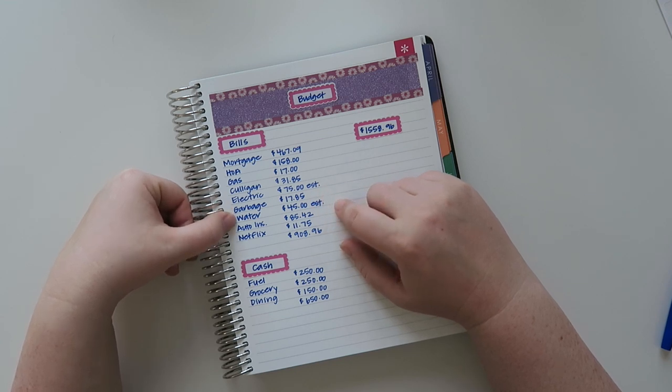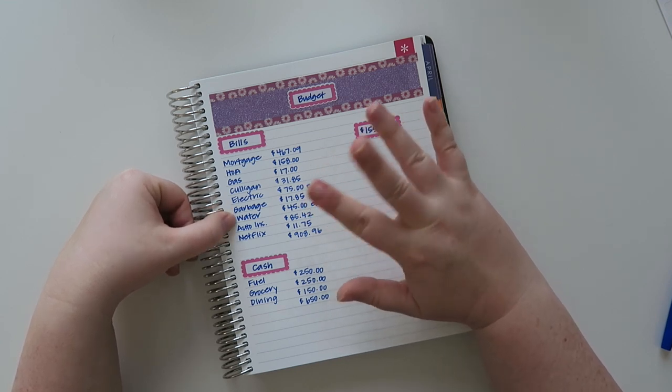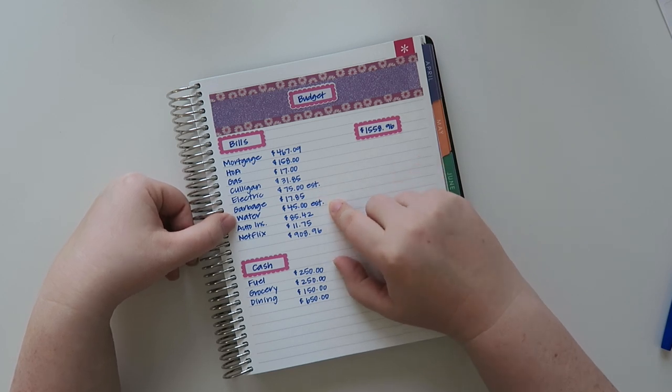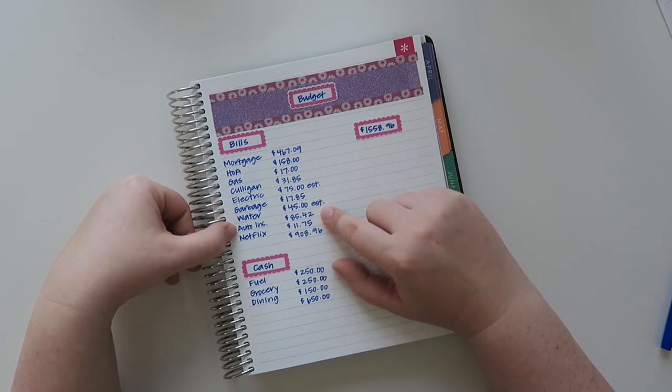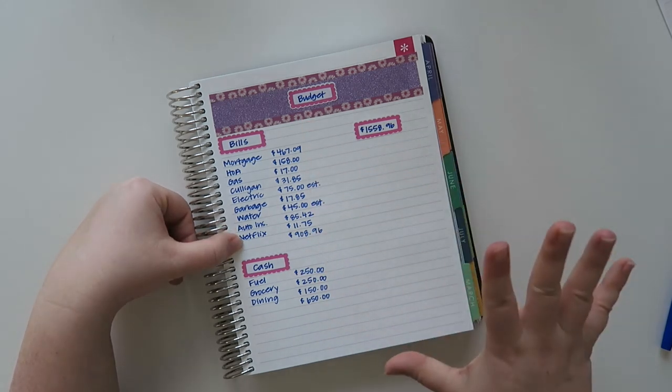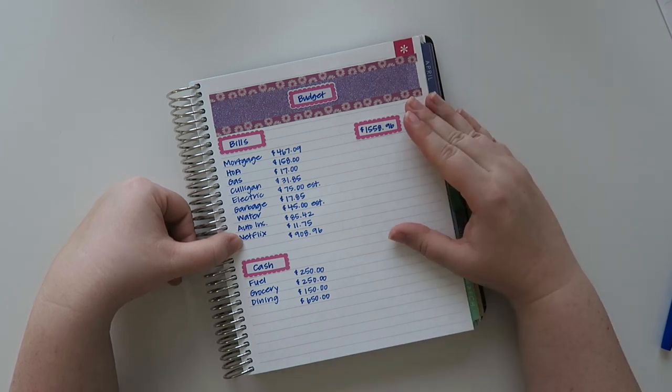My water is also an estimate and that usually ranges between $40 and $50 a month, but I usually just put in $45. Auto insurance is $85.42, and my Netflix is $11.75. So we have a total of just regular bills of $908.96.